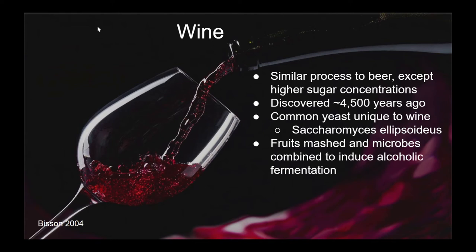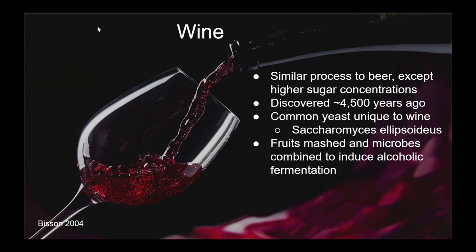In wine production, there is a similar process that occurs, but it usually involves using fruit since it has a higher concentration of sugars compared to grains. Normally, we see wines being created from grapes. Wine brewery is estimated to have begun about 4,500 years ago. A common yeast used in winemaking is Saccharomyces ellipsoideus. The mashed fruits and microbes are combined, and the yeast or bacteria release ethanol and carbon dioxide, which produces the unique wine-like taste.